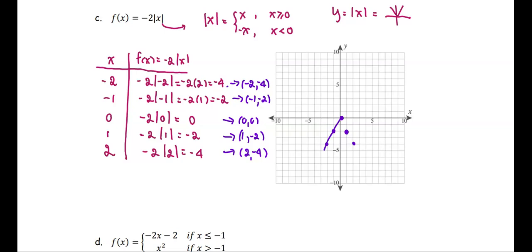So we get the V-shaped graph as well, but it's reflected with the x-axis. Another way we say that the graph is reflected because the coefficient is negative 2.